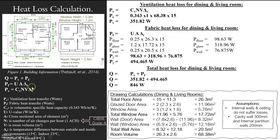N is number of air changes per hour — that goes back to our ventilation. When we're looking at how much heat is lost through ventilation, we need to know how many times that room is getting replaced with air — how many times does that whole space get its air changed? CIBSE — the Chartered Institution of Building Services Engineers — they say that for a living room situation, you need the air to change once per hour. So one air change per hour — that's the value there.